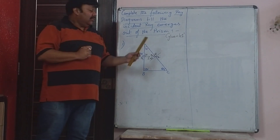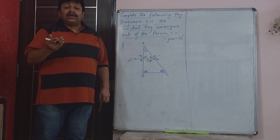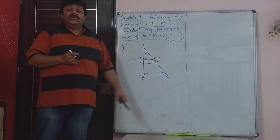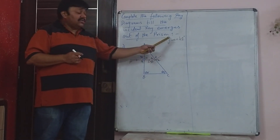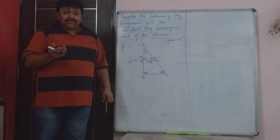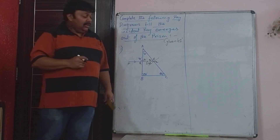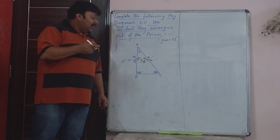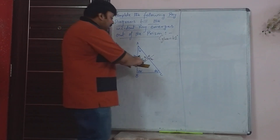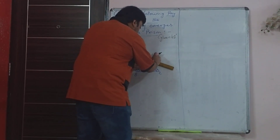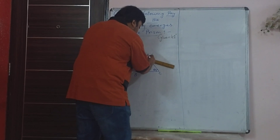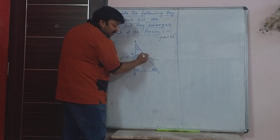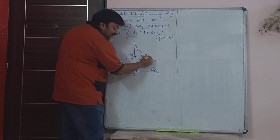At every surface where the ray is incident, figure out the angle of incidence and compare with the critical angle of glass. Here angle of incidence is 30 degrees, which is less than the critical angle of glass. So what will happen? Normal refraction. The ray will go from glass to air. Because it is travelling from glass to air — denser to rarer — it will undergo normal refraction and bend away from the normal.